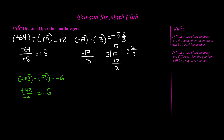Now let's do one more problem. This time let's say we have negative 35 divided by positive 4. Our dividend is a negative number and our divisor is a positive number. The same rule applies — rule number 2 — which says if the signs of the integers are different, then the quotient will be a negative number. So let's write negative 35 divided by positive 4 and do the division.